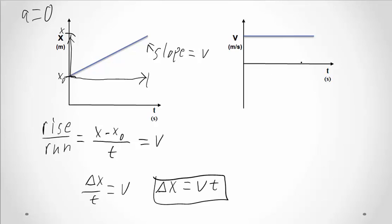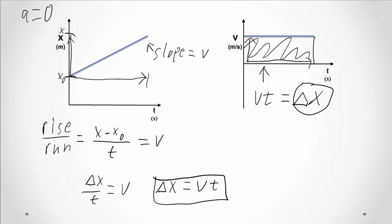Now, if we go here to the velocity time graph, I have this quantity v times t. Well, if I multiply v, which is this, times t, which is that, that is just the height and the width of this rectangle. So, if I multiply v times t, I get the area of that rectangle, and v times t has to be equal to delta x. So, just conceptually, this is an important thing to know, that the area on a velocity graph tells you the displacement.